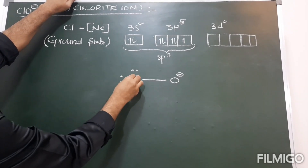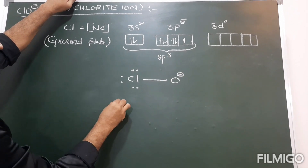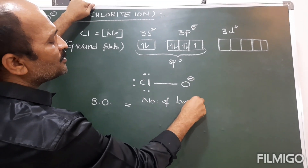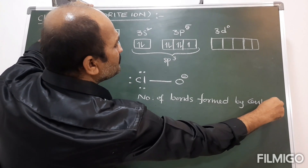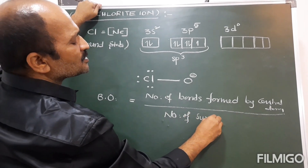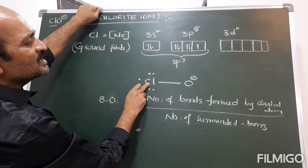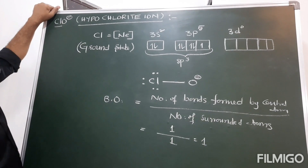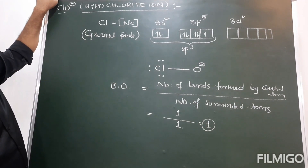The bond order in polyatomic molecules is defined as the number of bonds formed by the central atom divided by the number of atoms surrounding that central atom. For ClO⁻, the number of bonds formed by the central atom is 1, and the number of surrounded atoms is 1, so bond order is 1. Please remember: bond order in ClO⁻ is 1.